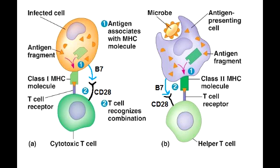In the case of cytotoxic T cell activation, you see the complex being formed between MHC1 and the foreign antigen, whereas in the case of helper T cell activation, you see the complex being formed between MHC2 and the foreign antigen. Once the MHC and antigen complex has been formed, it will be expressed on the cell surface. The MHC1-antigen complex is recognized by T cell receptors on the cytotoxic T cell, whereas the MHC2-antigen complex is recognized by T cell receptors on the T helper cells. This is the first signal.